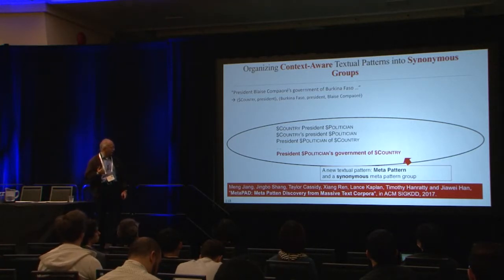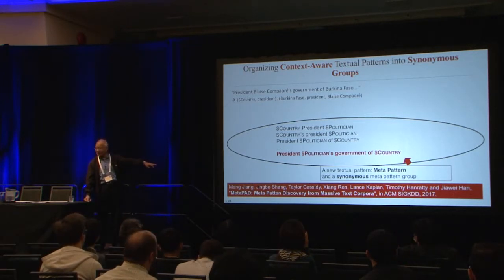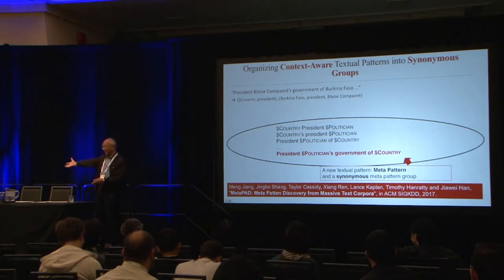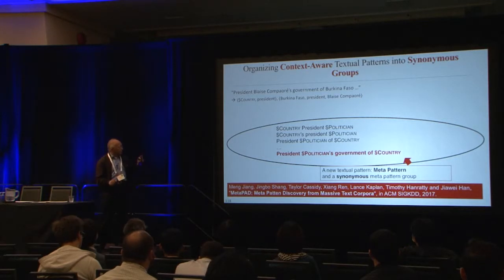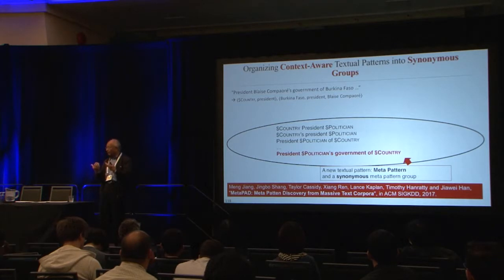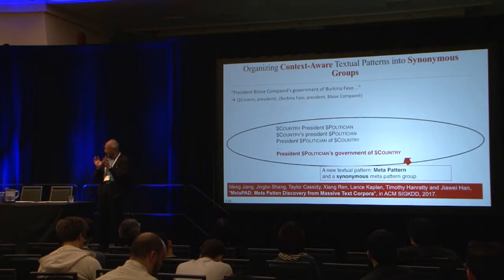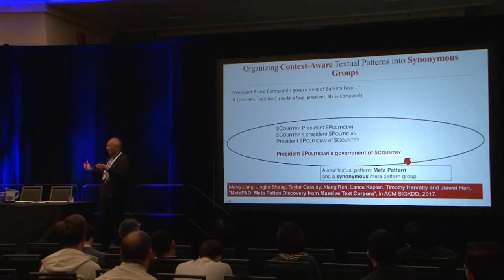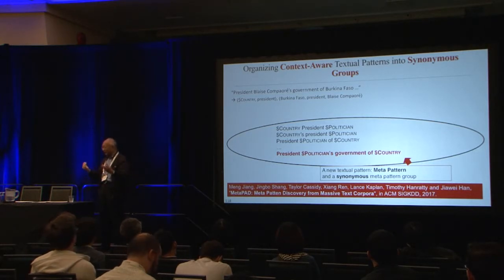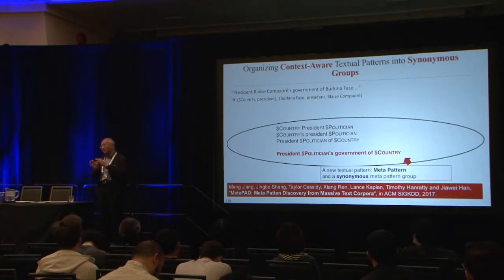This work appears in KDD 2017. The general philosophy: from texts, you can extract things and type them. If the type is 'country,' you know 'United States, President Barack Obama' from the newspaper. Instead of using 'United States' directly, you replace it with a dollar-sign type symbol for 'country.' Then US President Barack Obama, Russian President Putin, France President, etc. all collapse into the same meta pattern.